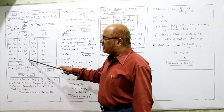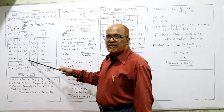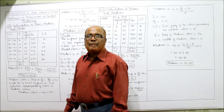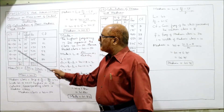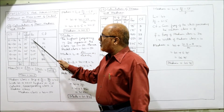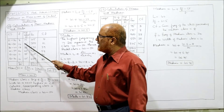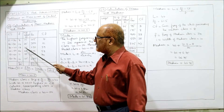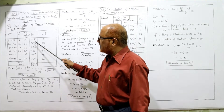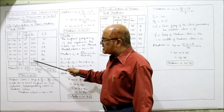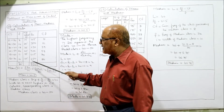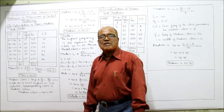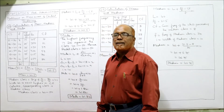Now multiply f into m to get the fm column: 7×15 = 105, 14×25 = 350, 18×35 = 630, and so on. The total summation of fm is 3240.